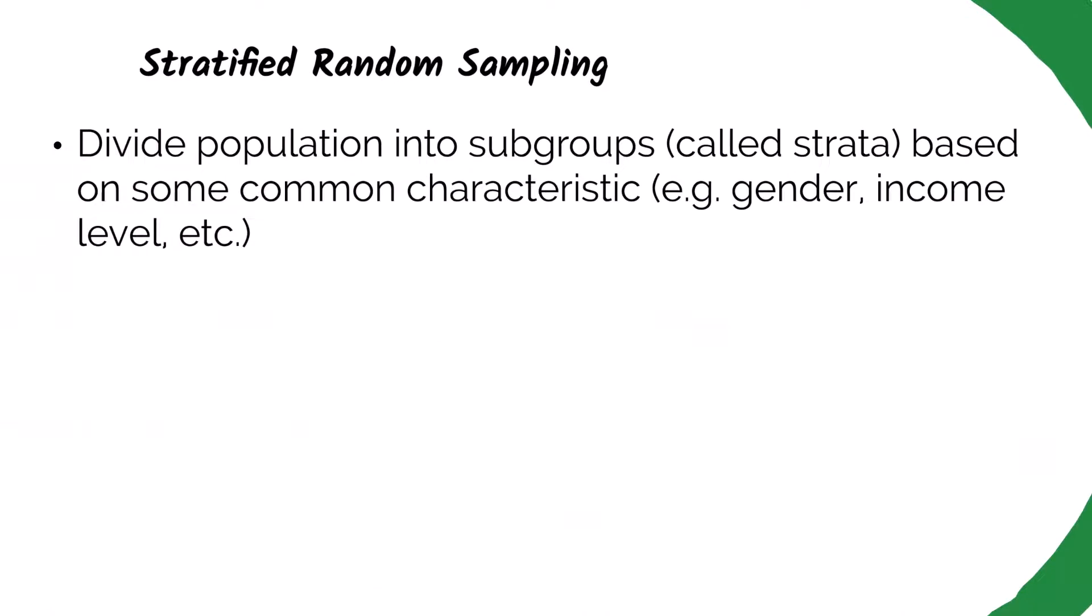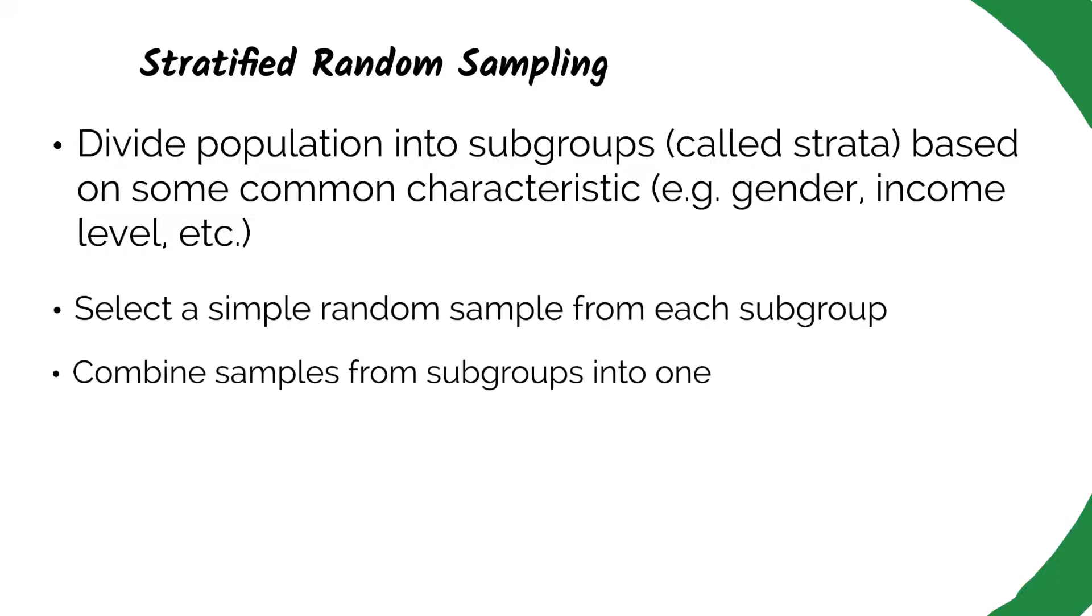Another technique is called stratified random sampling. This is where we divide the population into subgroups called strata based on some characteristic. For example, we could use gender as a characteristic and divide the population into male, female, and non-binary. Or we could also group people by their income level, like low, middle, and high income.